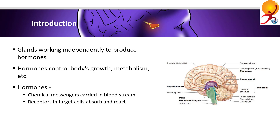Peptide hormones — an example being insulin — are short chains of amino acids. Peptide hormones are hydrophilic, meaning water-loving, so they dissolve in water and don't pass easily through the cell membrane. The receptors for peptide hormones are embedded in the plasma membrane of target cells. Steroid hormones, such as testosterone and estrogen, are lipids, so they're hydrophobic or fat-soluble and can pass easily through the hydrophobic layer of the plasma membrane and enter the cell. Thus, the receptors for steroid hormones are located inside the cell.